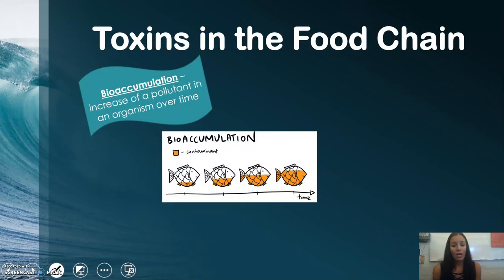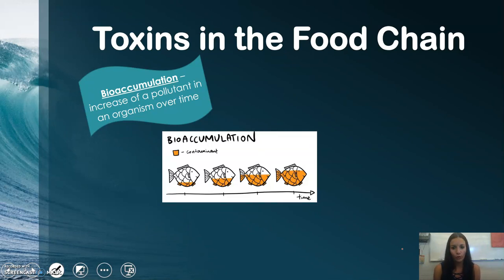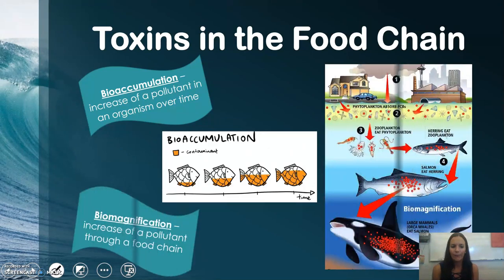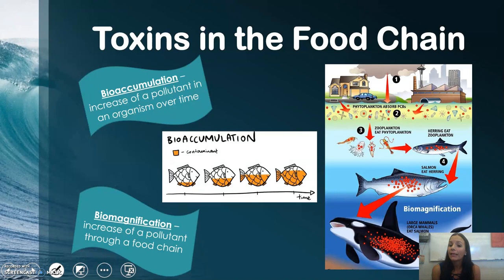Toxins in the food chain are directly impacting us. Bioaccumulation is the increase of contaminants in a single organism over its lifespan — it gets more and more contaminants over time. Biomagnification is the increase of a pollutant as it moves through the food chain, so smaller organisms have less of the pollutant than larger organisms, as shown by the red dots in the diagram.